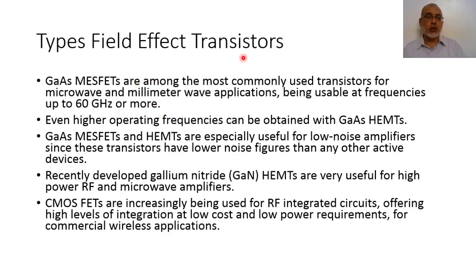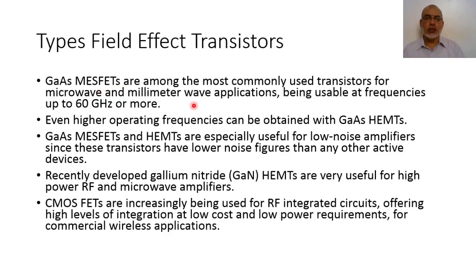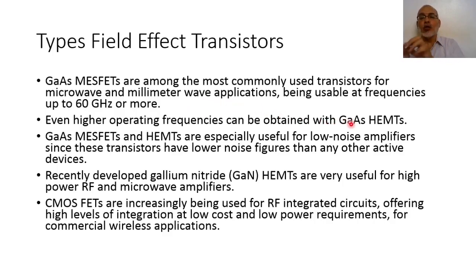For the types of field effect transistors: the metal semiconductor field effect transistor typically uses gallium arsenide as the semiconductor. Gallium arsenide MESFETs are among the most commonly used transistors for microwave and millimeter wave applications, being usable at frequencies up to 60 GHz and more. At higher operating frequencies we can use gallium arsenide high electron mobility transistors. Gallium arsenide MESFETs and HEMTs are especially useful for low-noise amplifiers since these transistors have lower noise figures than any other type of device.